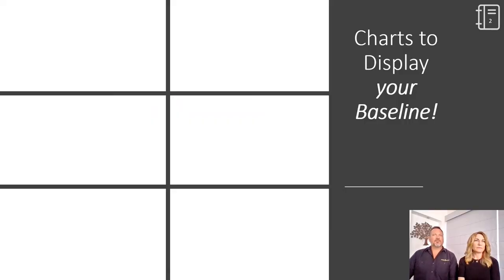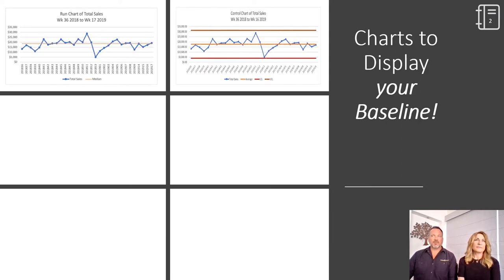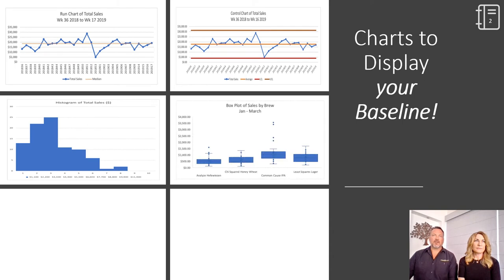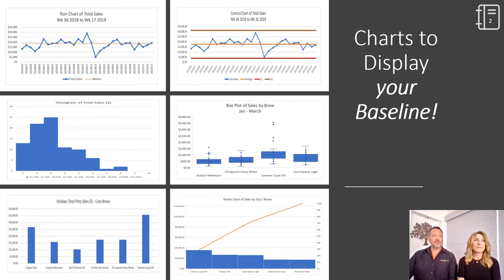In this section, we will cover six common baseline data display tools: the run chart, control chart, histogram, box plot, column chart, and Pareto chart. We are in the measure phase of the DMAIC, not yet in analyze. We'll learn about these six workhorse charts so that you know your best options for displaying your baseline data.